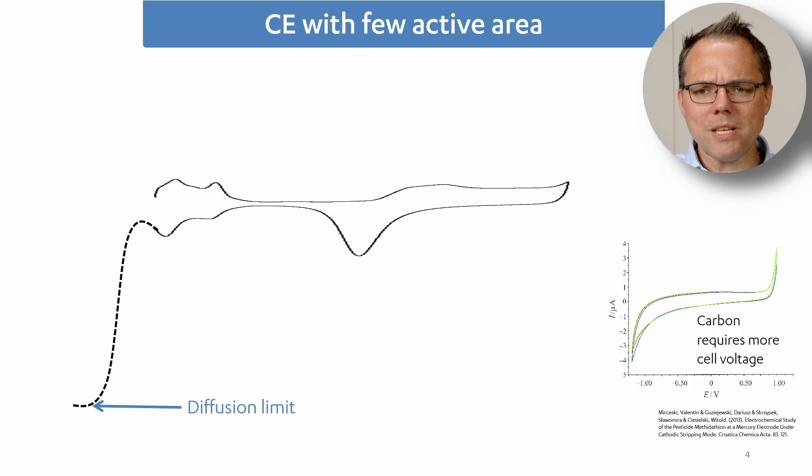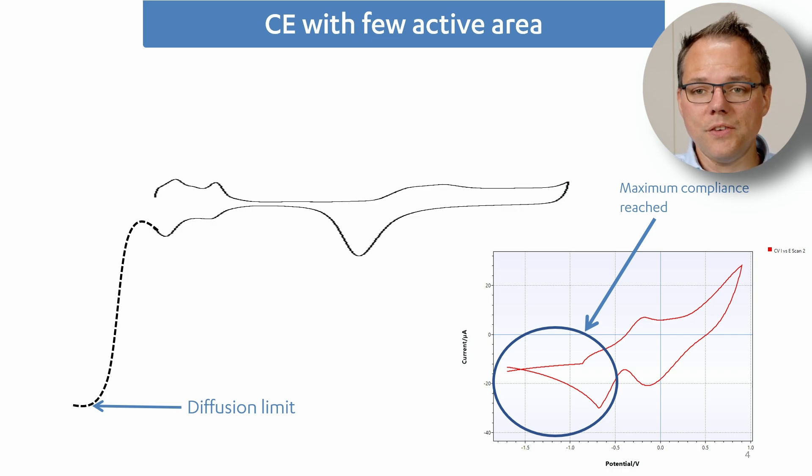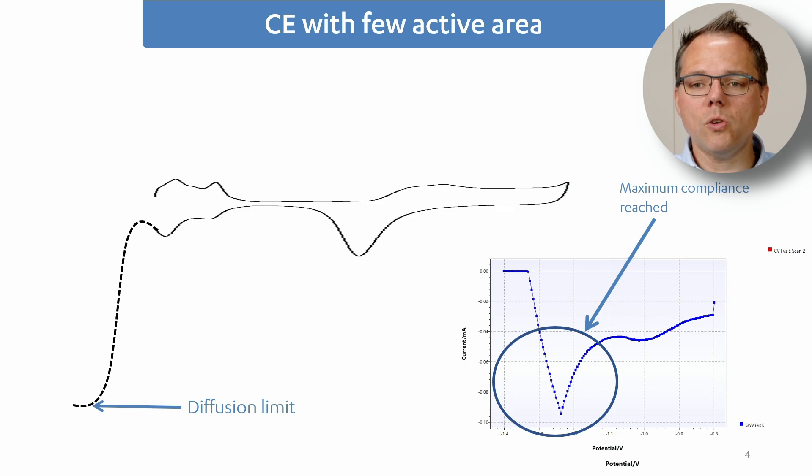How does that look in your measurements? Well, in a CV often you see a very sharp peak and suddenly a rather noisy curve happening there. In a DPV it looks different. There suddenly your current drops to zero. Why is that?